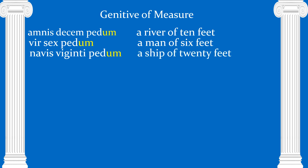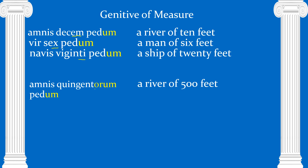So when we have amnis decem pedum, we have 'a river of ten feet.' Vir sex pedum — 'a man of six feet.' Navis viginti pedum — 'a ship of twenty feet.' The yellow highlighting tells you we're looking at the genitive. The number is not in the genitive here because those numbers are not declinable. However, amnis quingentorum pedum — quingent- is five hundred, and that -orum means 'of' — so this is 'a river of five hundred feet.' Because this number is declinable, it takes the genitive form for measurement.